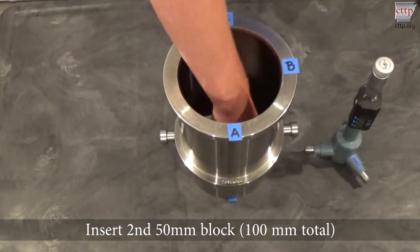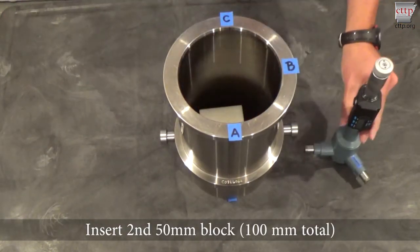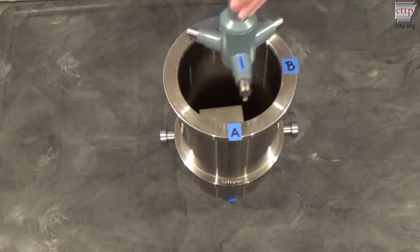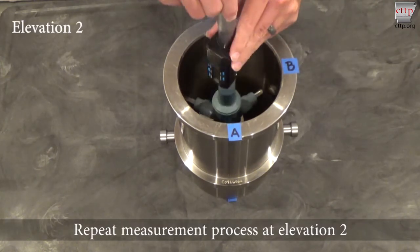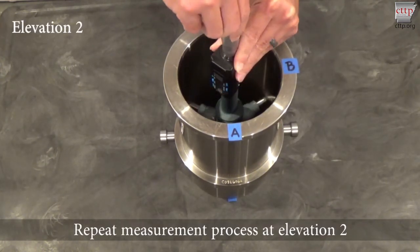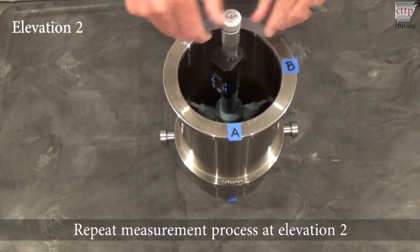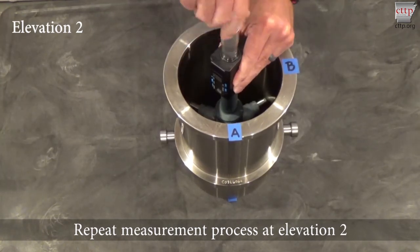Insert the second 50 millimeter block on top of the first block for elevation 2 for a total of 100 millimeters. Insert the bore gauge and repeat the measurement process at positions A, B, and C.